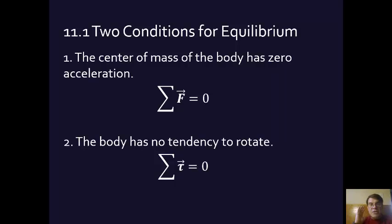The translational forces, the forces on it, on the center of mass must be zero, have zero acceleration that is, and then secondly, the body has no tendency to rotate. It's not going to accelerate in straight line and it's not going to rotate. Those are the two conditions for equilibrium.